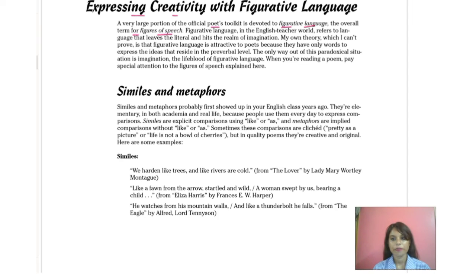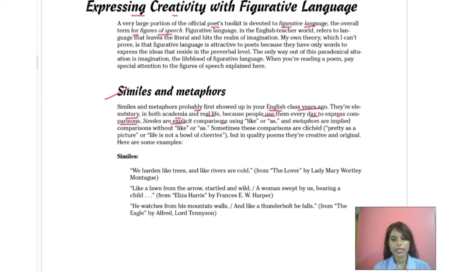Starting with similes — similes and metaphors probably first showed up in your English lectures years back; you might have heard about them long ago. They are complementary in both academia and real life because people use them every day to express comparisons. Similes are explicit comparisons using 'like' and 'as' — but not always — and metaphors are implied comparisons without any words like 'like' or 'as'.